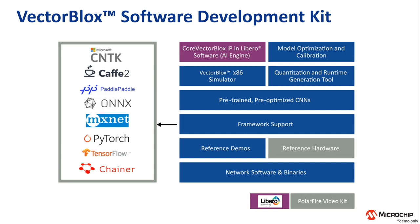The VectorBlocks software development kit enables convolutional neural networks to be run on our PolarFire FPGAs. The SDK supports neural networks developed using many popular frameworks like Caffe, TensorFlow, MXNet, and more. The SDK also includes tutorials for various frameworks and example projects supported in the PolarFire video kit.